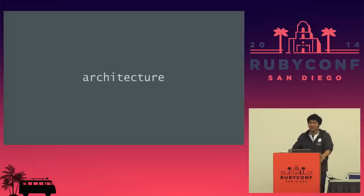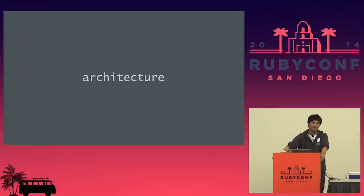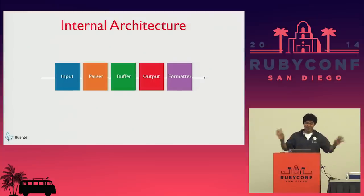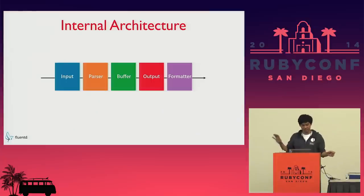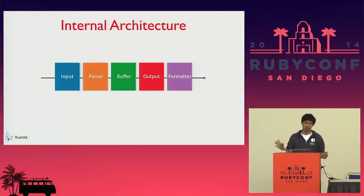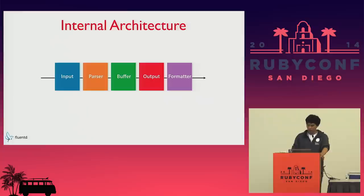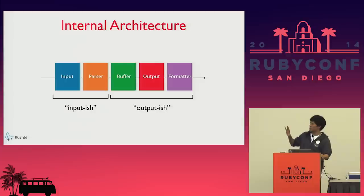Now the fun part: architecture. This is right about where my knowledge starts to get very shaky, so ask questions to harass me. At the highest level, this is what Fluentd looks like as data goes through the system: input deals with accepting inputs, you can write your own parser to parse it, data is buffered, output handles where to send the data depending on tags the input generated, and finally you can format it for certain outputs. The first two mostly deal with inputting data into Fluentd, and the other three deal with outputting to external systems.